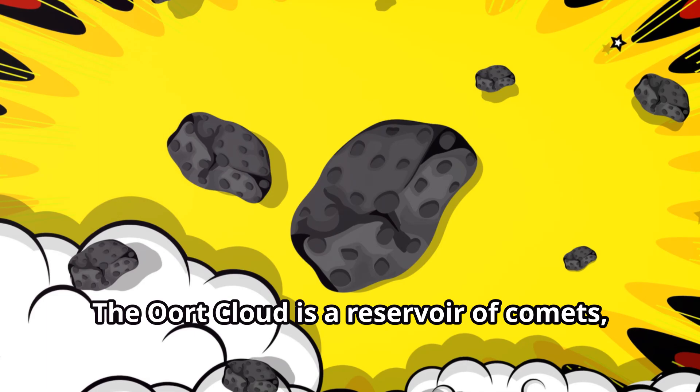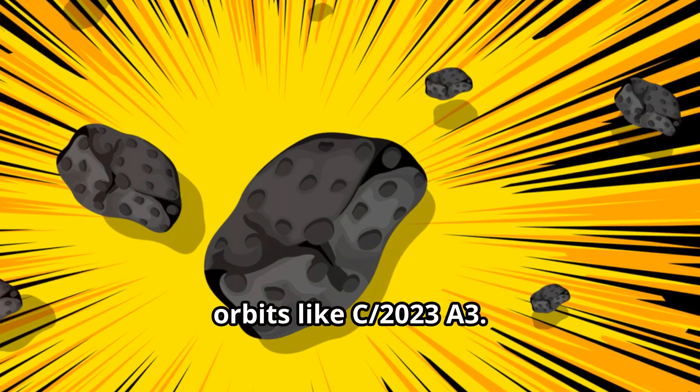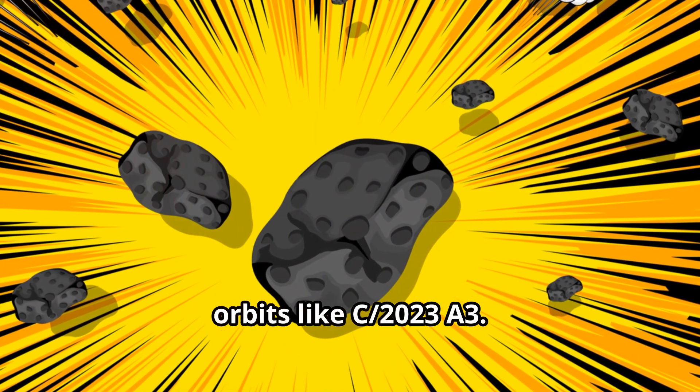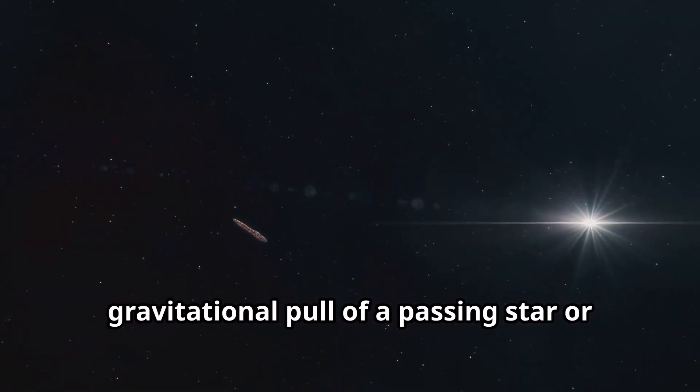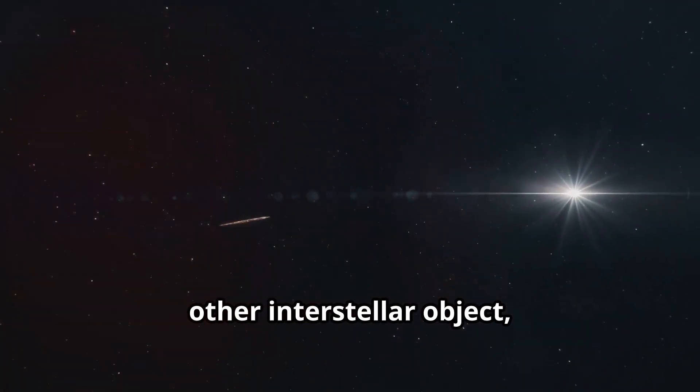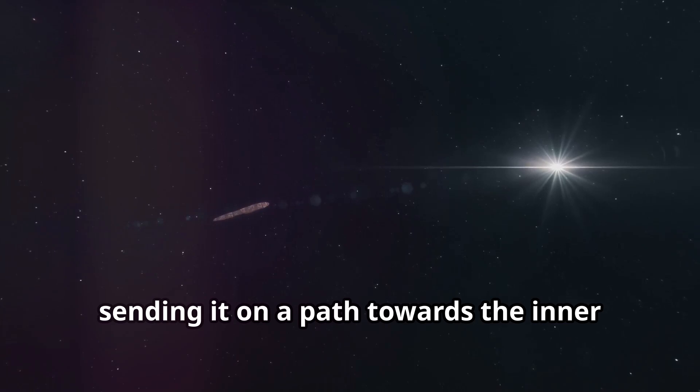The Oort Cloud is a reservoir of comets, many of which have highly elliptical orbits like C/2023 A3. This comet may have been disturbed by the gravitational pull of a passing star or other interstellar object, sending it on a path towards the inner solar system.